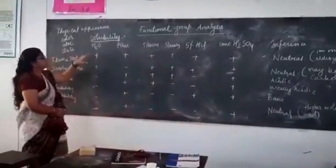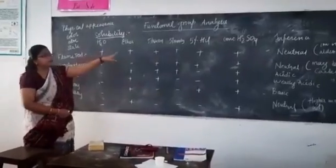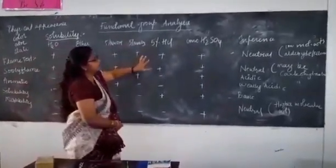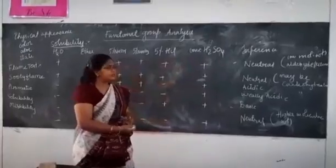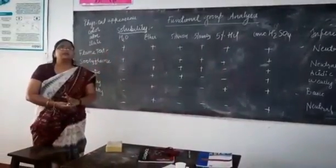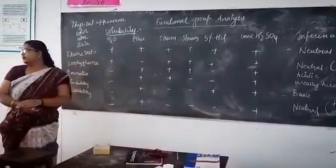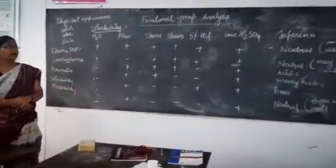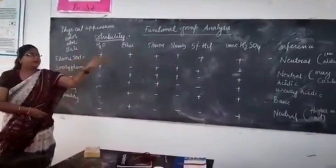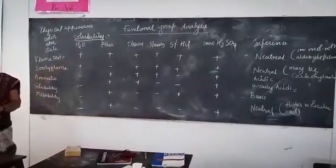When the compound is soluble in all solvents — water, 5% NaOH, 5% HCO₃, 5% HCl, and concentrated sulfuric acid — then what do you infer? The given compound is neutral, and it may be a low molecular weight compound like an aldehyde or ketone.